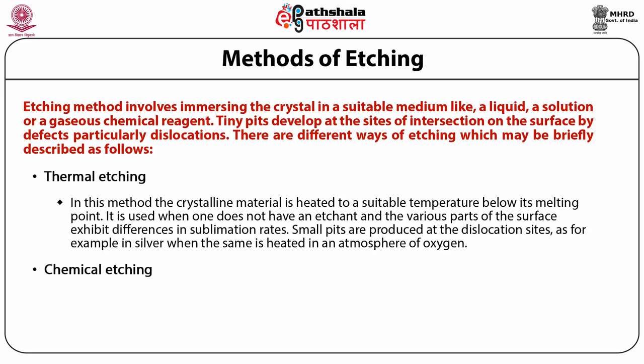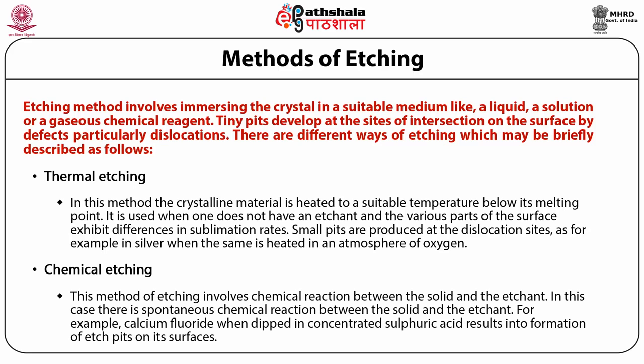Chemical etching: this method of etching involves chemical reaction between the solid and the etchant. In this case, there is spontaneous chemical reaction between the solid and the etchant. For example, calcium fluoride when dipped in concentrated sulfuric acid results in formation of etch pits on its surfaces.